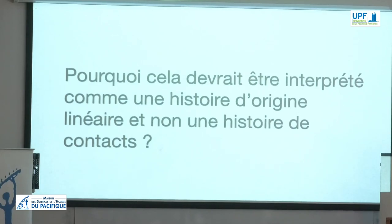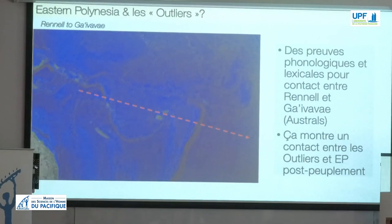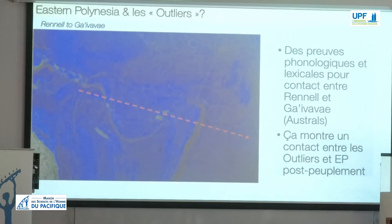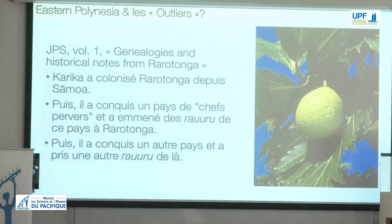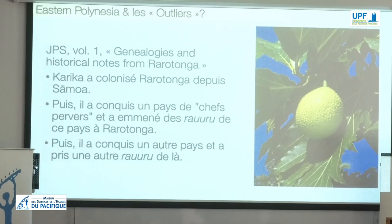For example, the distribution of the word kaute for hibiscus. Indeed, there is strong linguistic evidence of Eastern Polynesian languages being in contact with the Samoan outliers, as I showed in 2018 and in forthcoming work between Gaivavai in the Austral Islands and Renelis, where I found phonological and lexical evidence for early post-settlement contacts between these two islands. Additionally, some oral histories may account for importation of certain plants from islands not in Western Polynesia — such as the story of Karika from Rarotonga, reported in JPS in the late 19th century, describing settlement from Samoa and subsequent trips to distant islands from where two varieties of breadfruit were imported into Eastern Polynesia. Such oral histories only add to evidence of long-distance contacts.